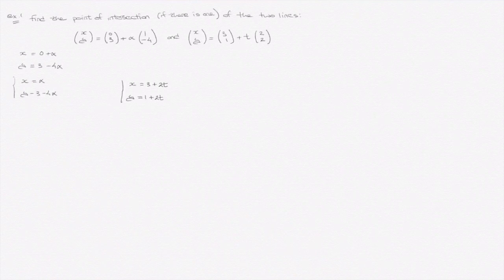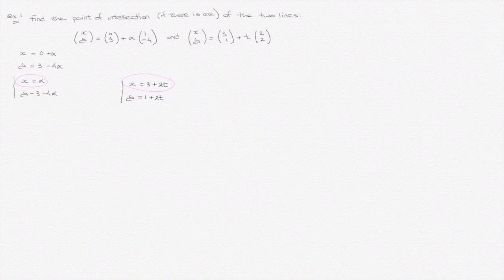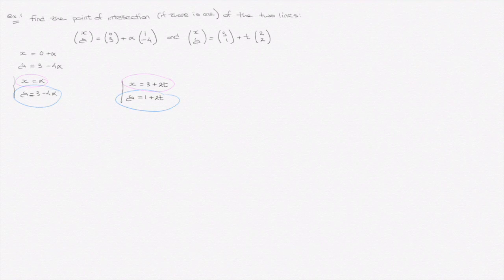Now we're going to equate each of the two lines' x and y coordinates. We'll equate x equals alpha with x equals 3 plus 2t, and we'll equate y equals 3 minus 4 alpha with y equals 1 plus 2t. That leads us to alpha equals 3 plus 2t, and 3 minus 4 alpha equals 1 plus 2t.